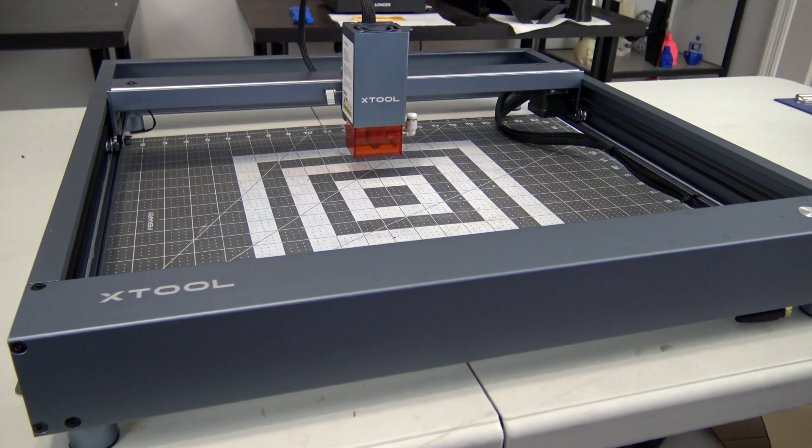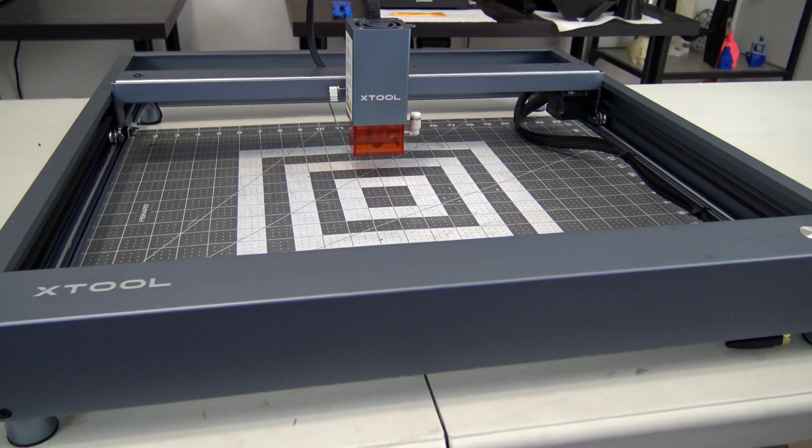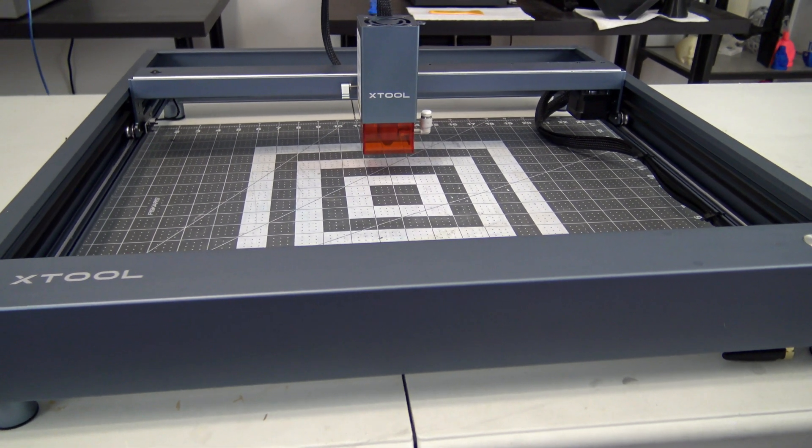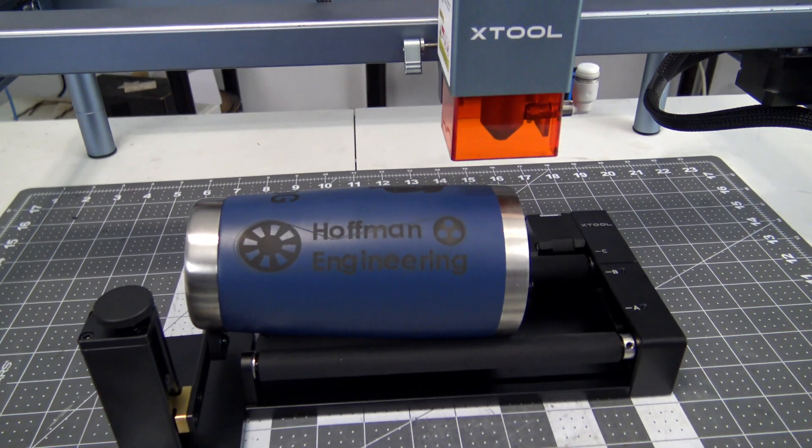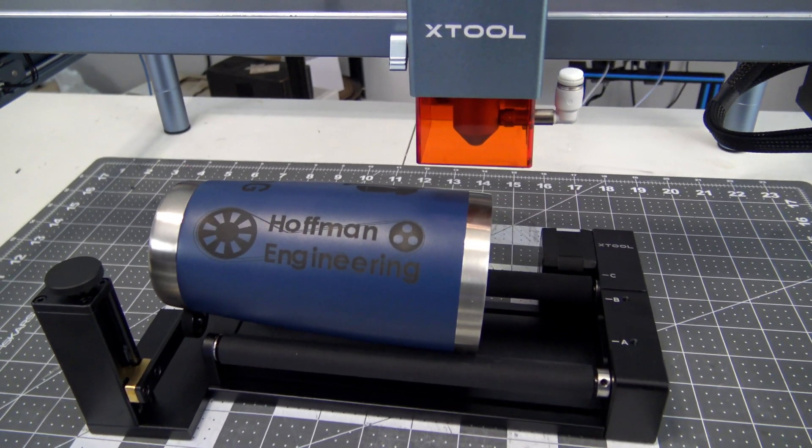The D1 Pro series consists of three different models: a 5W, 10W, and 20W version. The higher the wattage, the more powerful the laser is, which brings its own set of features. I have the 10W version today, their mid-tier model, with the rotary attachment bundle.